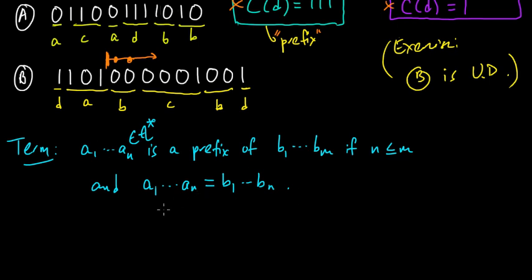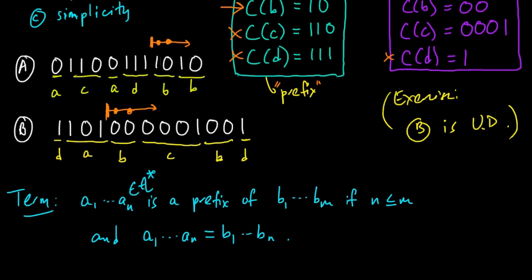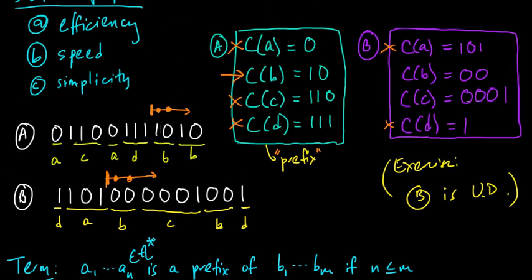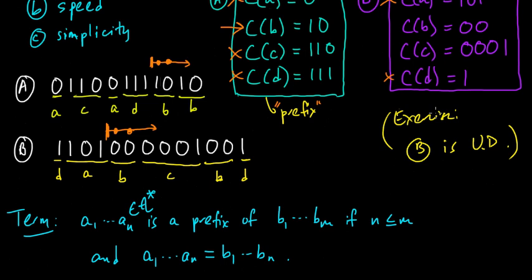So in other words, B1 to BM, this string starts out looking like A1 to AN. It starts out with this string, just like here. So this would have been B1, B2, B3, B4, and this would have been A1, A2. So B1, B2, that would be this part, equaled A1, A2, that would be this part. Okay, so that is what we mean when we say prefix.